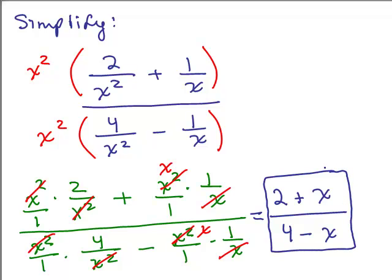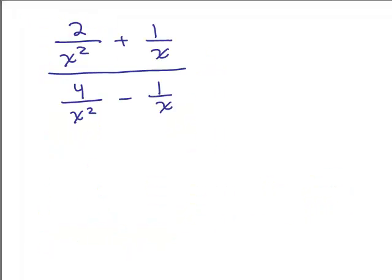You could also do this problem using method 1. You would get a common denominator in the numerator, add the fractions, get a common denominator in the denominator, add the fractions. Then multiply by the reciprocal and you should get the same result. Let's do it using method 1. For the numerator, I need a common denominator to add the fractions, so I'll multiply the second fraction by X over X so that both have X squared as the denominator.